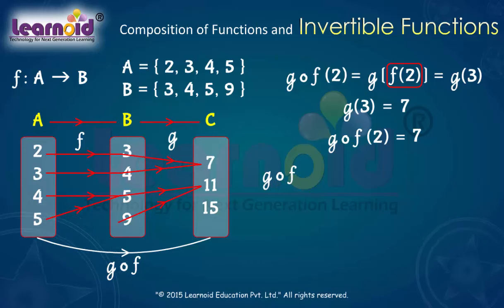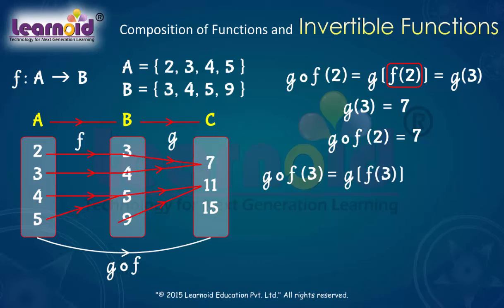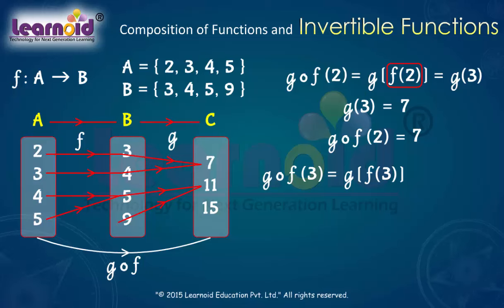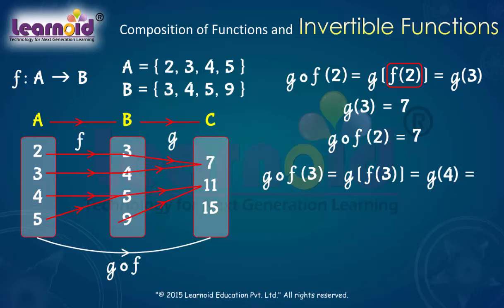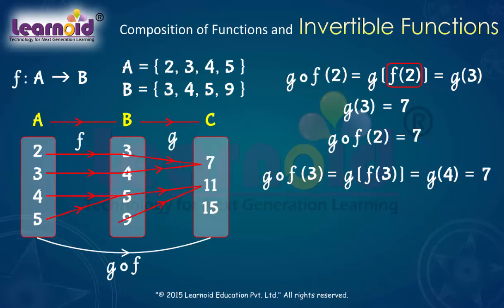Similarly, gof(3) = g(f(3)). Since f(3) = 4 and g(4) = 7, so gof(3) = 7.